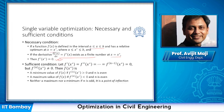We can say we'll reach a minimum value of the function if the nth derivative where we obtain the non-zero value is even and the value is greater than zero. We'll get the maximum value if the derivative order is even and the value is less than zero. However, if the nth derivative order is odd and we find a positive value, it becomes a point of inflection.